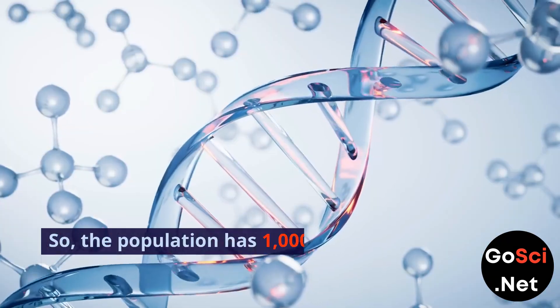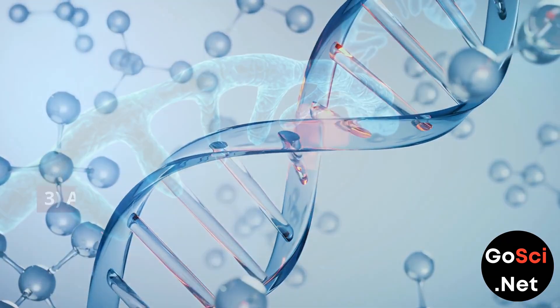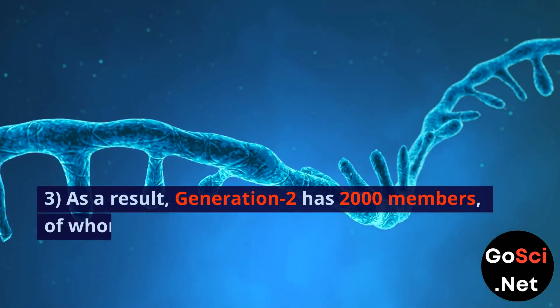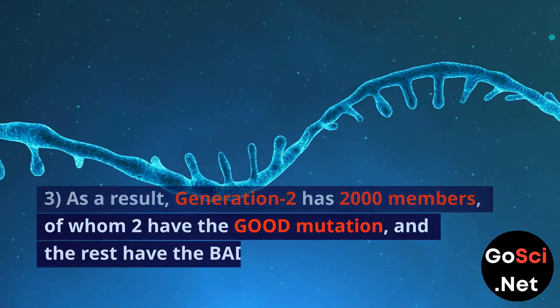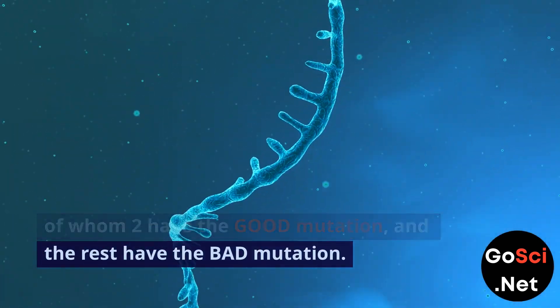So the population has 1,000 members who can have 2 children each. As a result, Generation 2 has 2,000 members, of whom 2 have the good mutation, and the rest have the bad mutation.